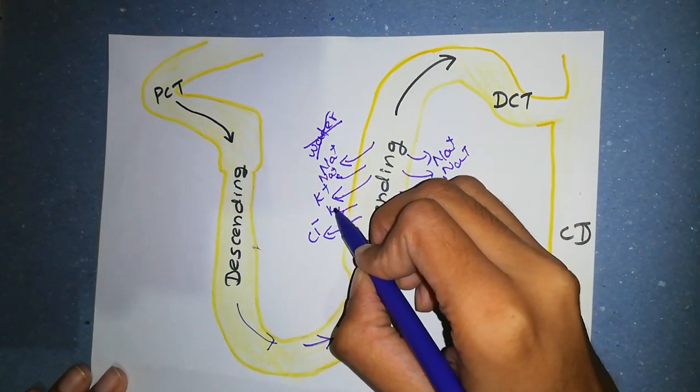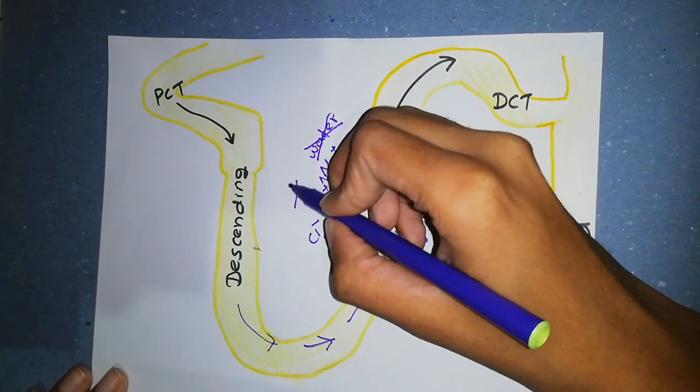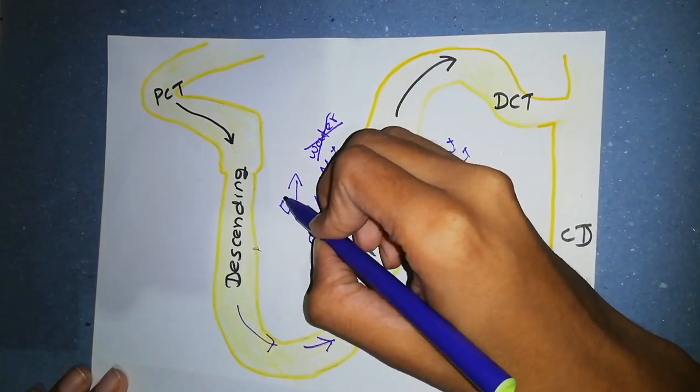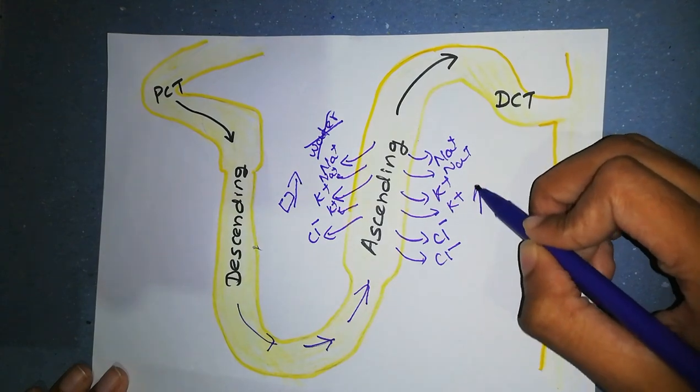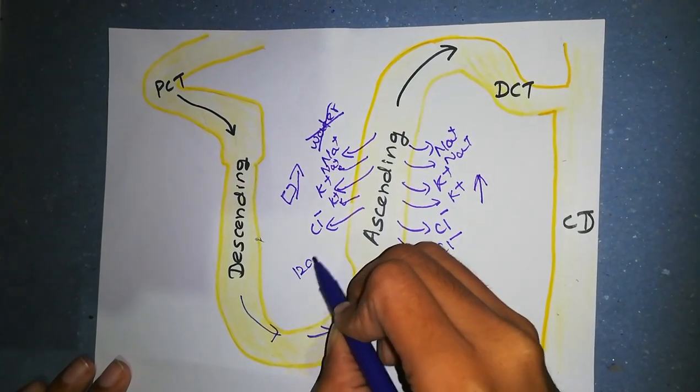Eventually, it multiplies and raises the interstitial fluid osmolarity to 1200 milliosmoles per liter. Point number two.